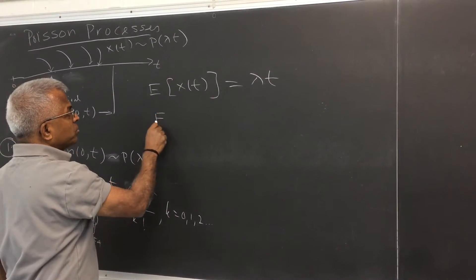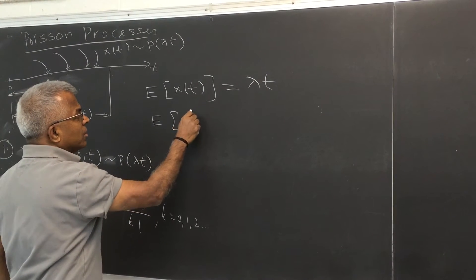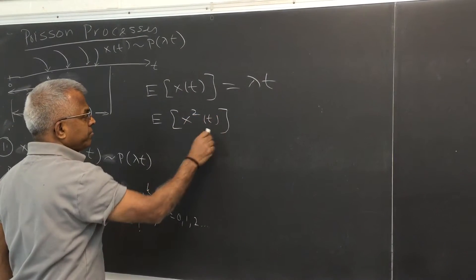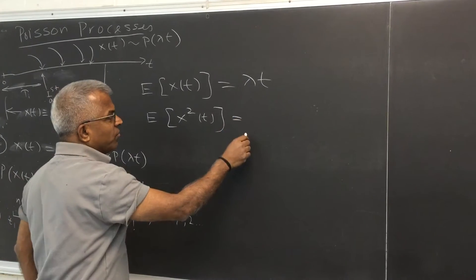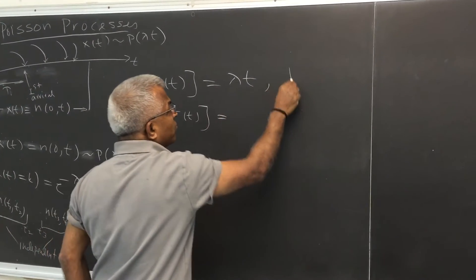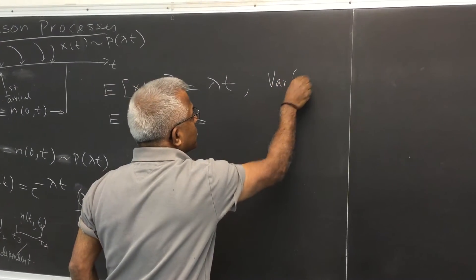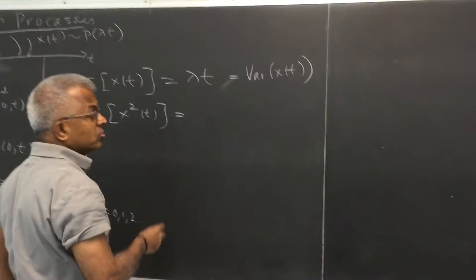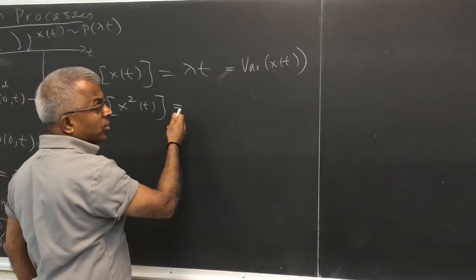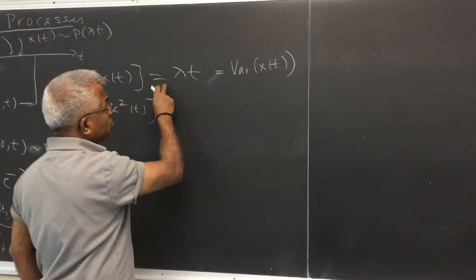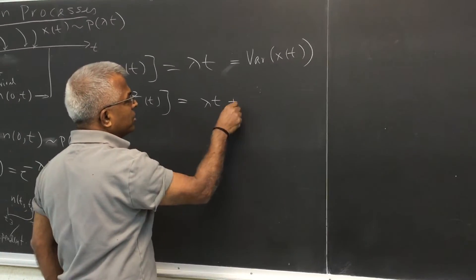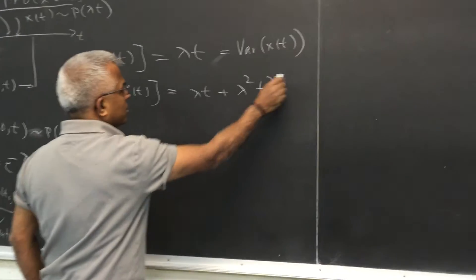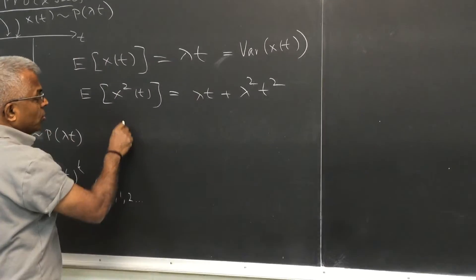So it's lambda t, it's a parameter itself. And expected value of x squared t, consequently the variance of x of t is also lambda t. So consequently x squared is variance plus square of the mean, so it's lambda t plus lambda squared t squared.